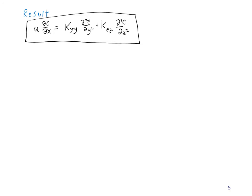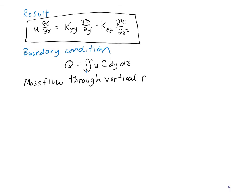To solve this differential equation, we need a boundary condition: Q = ∫∫ uC dy dz, where Q is the emission rate. In words, this means the mass flow through a vertical plane downwind must equal the emission rate Q, which has units of grams per second.